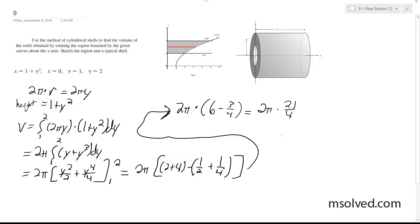And finally, simplifies down to 21 pi over 2. That's it.